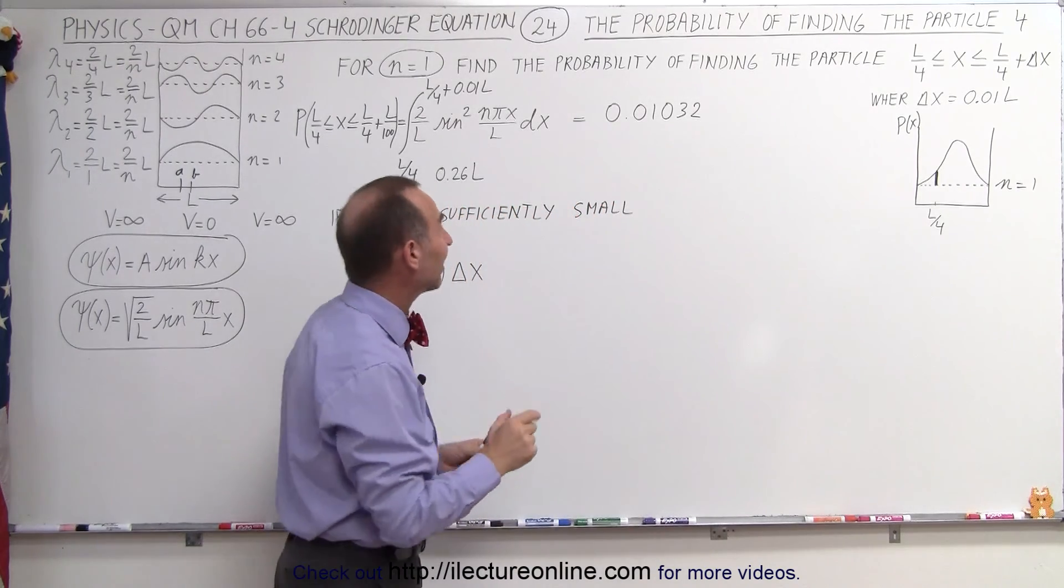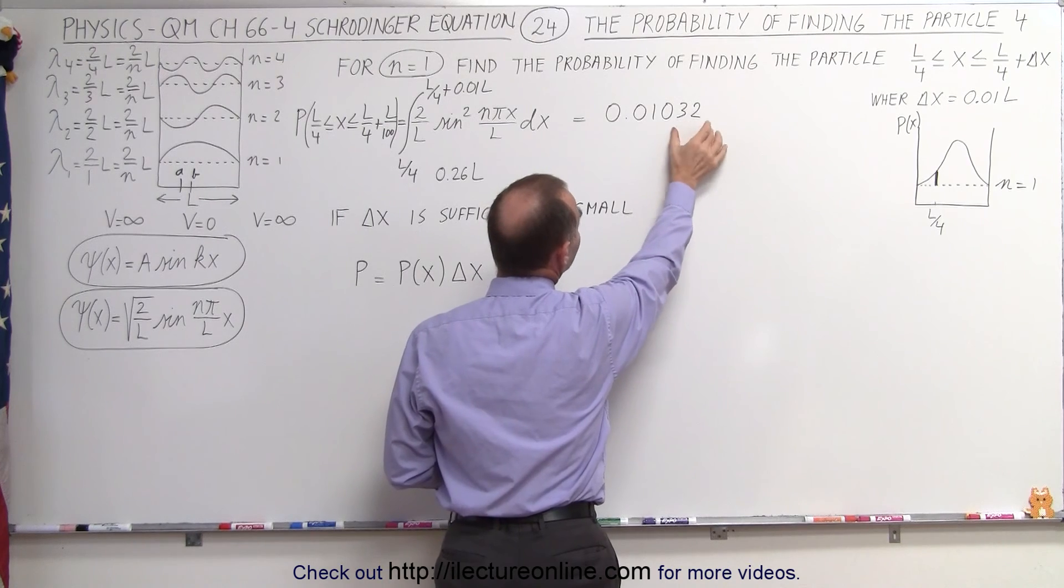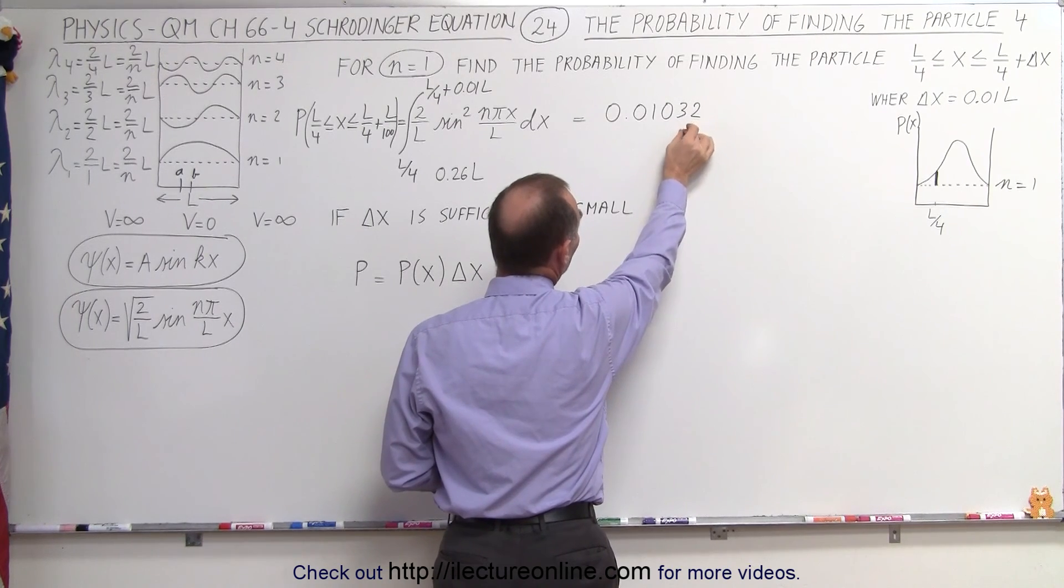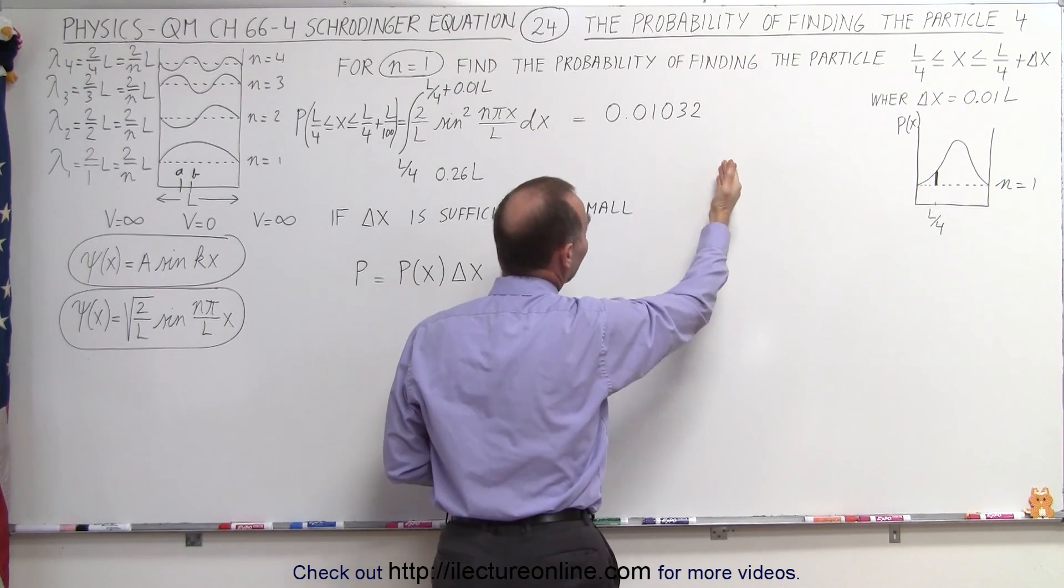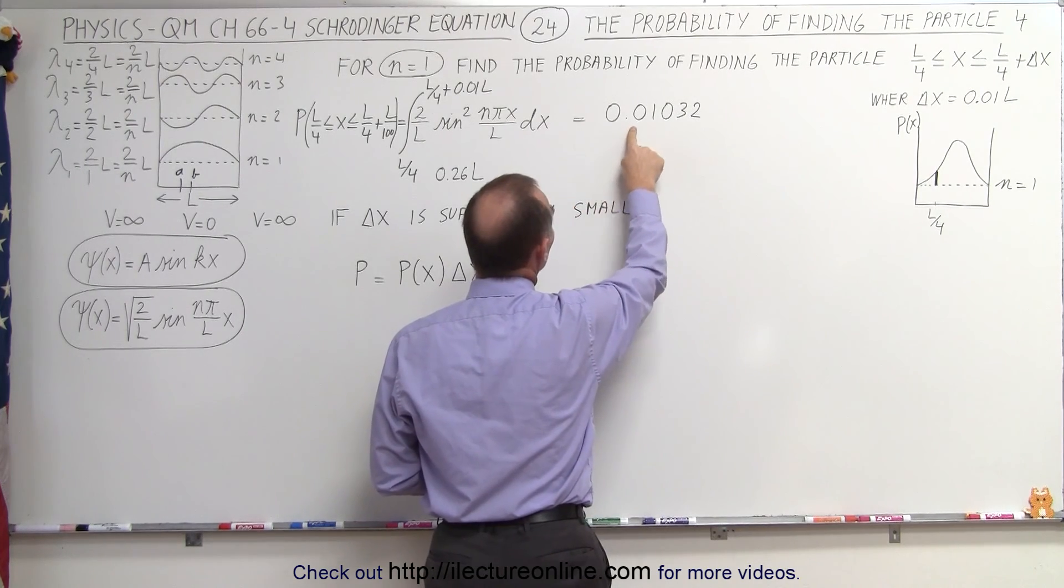And we also realized that as delta x became smaller, this 3, 2 at the end here would slowly become smaller, smaller, smaller. And in the limit, as delta x went to 0, the probability would be exactly 0.01.